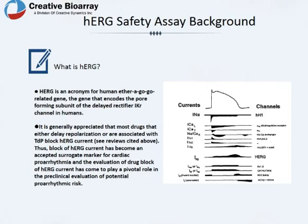HERG is an acronym for Human Ether-a-go-go Related Gene — the gene that encodes the pore-forming subunit of the delayed rectifier IKr channel in humans. It is generally appreciated that HERG current has come to play a pivotal role in the pre-clinical evaluation of potential pro-arrhythmic risk.